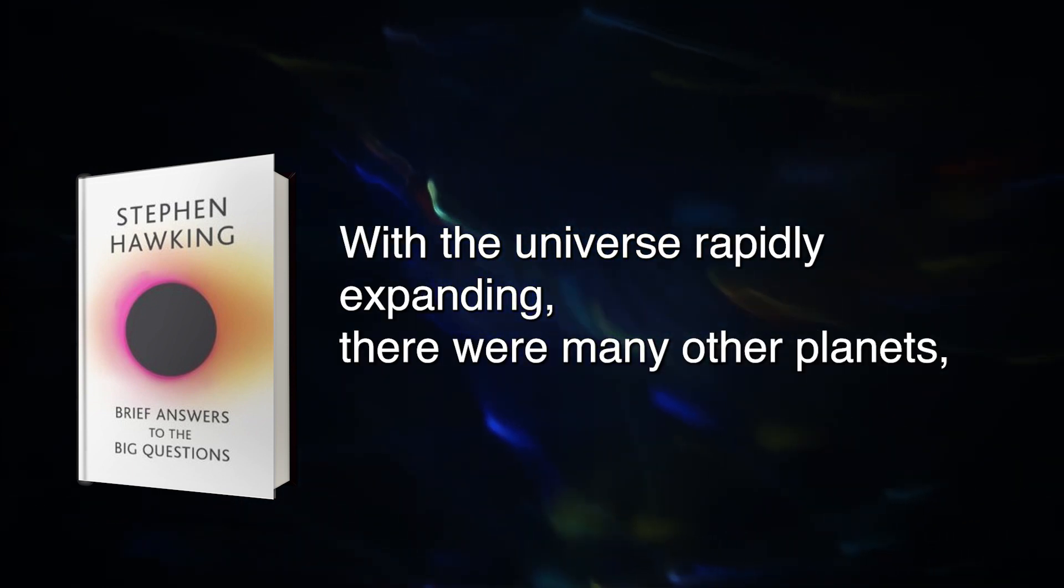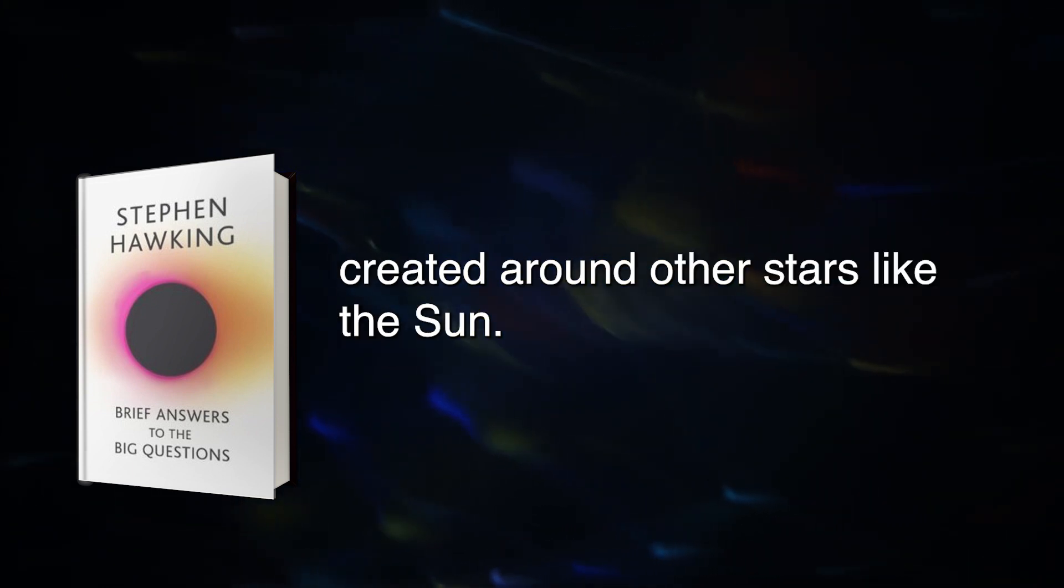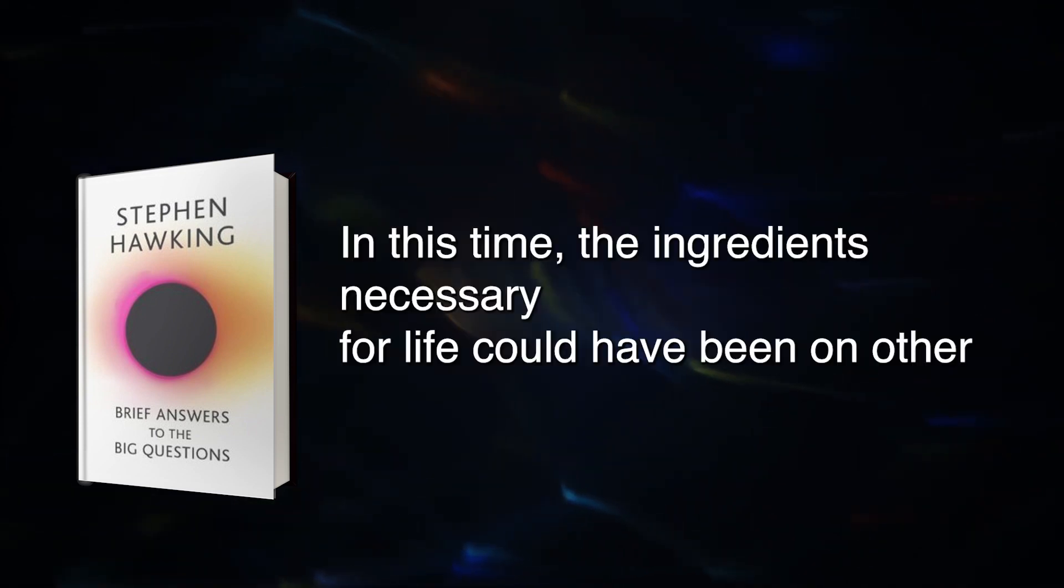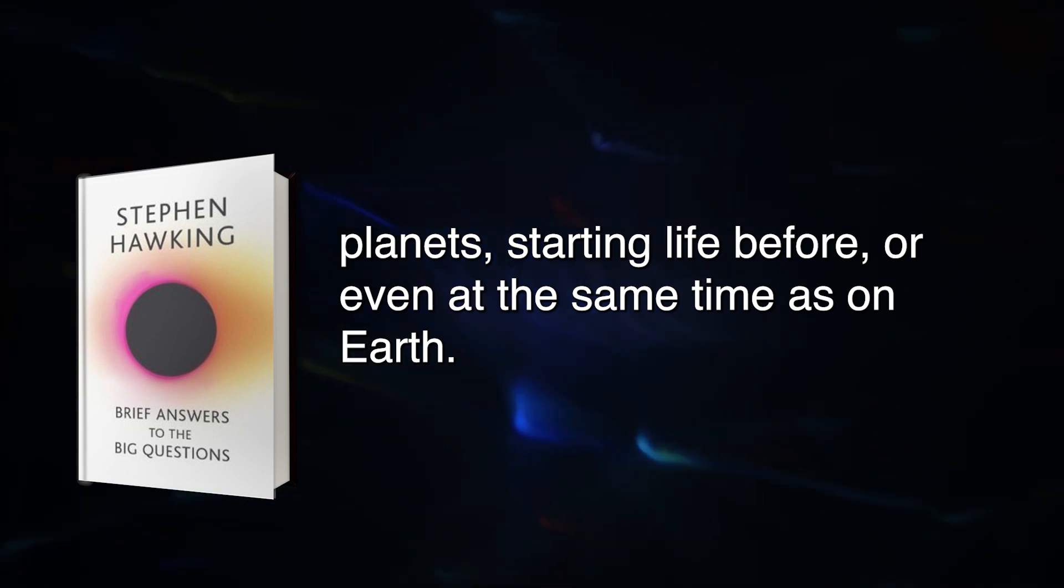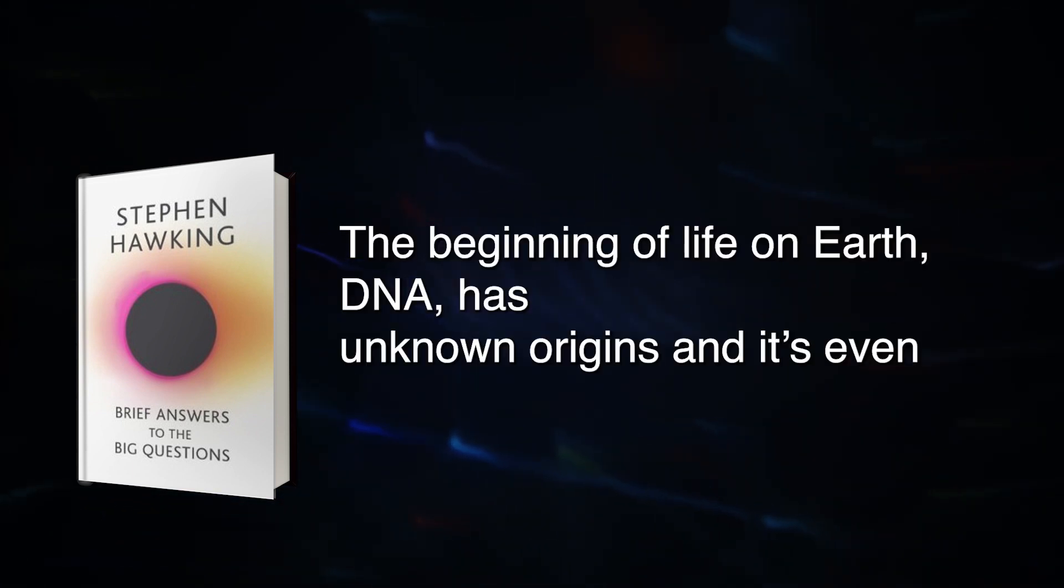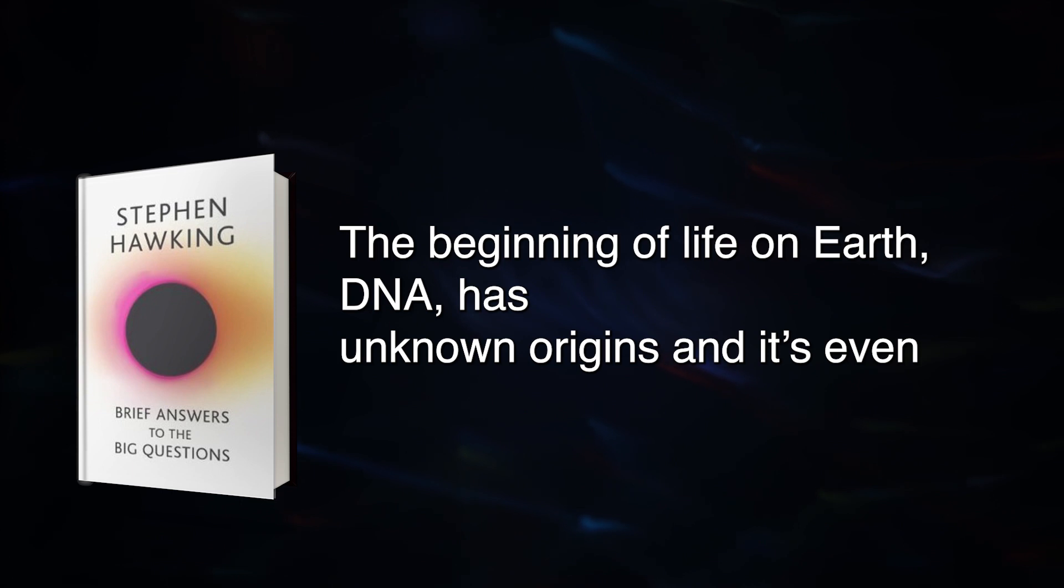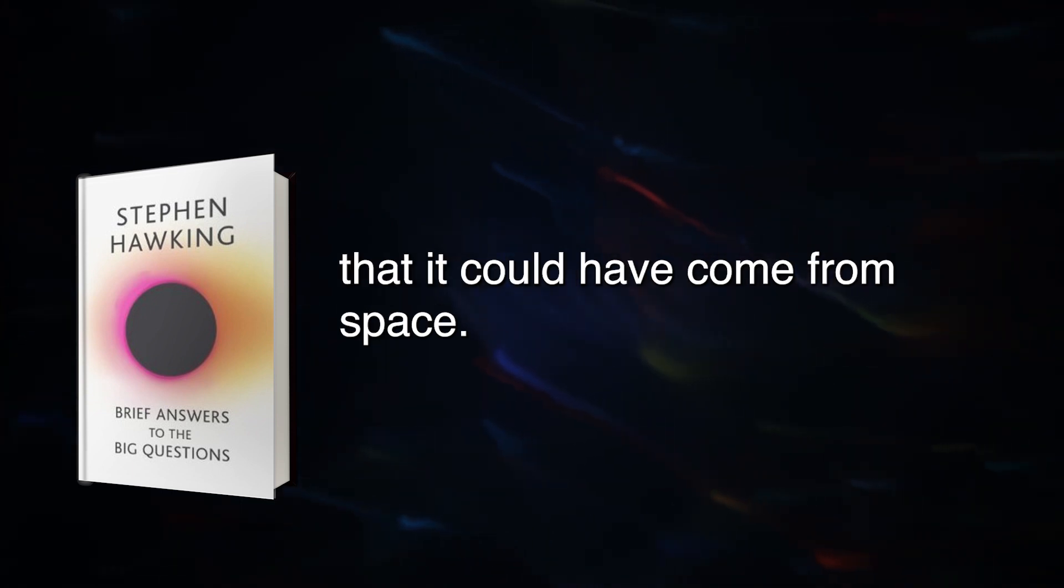With the universe rapidly expanding, there were many other planets like Earth created around other stars like the Sun. In this time, the ingredients necessary for life could have been on other planets, starting life before or even at the same time as on Earth. The beginning of life on Earth, DNA, has unknown origins and it's even speculated that it could have come from space.